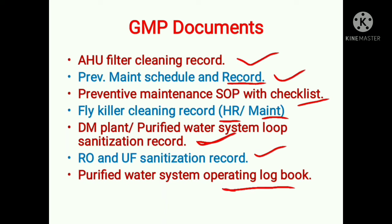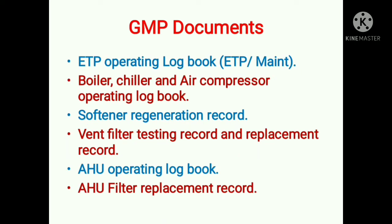In the purified water system operating logbook, operating parameters like pressure and flow are to be recorded. Then ETP operating logbook, which is maintained by either the ETP department or maintenance department. Then boiler, chiller, and air compressor operating logbook. Then softener regeneration record.